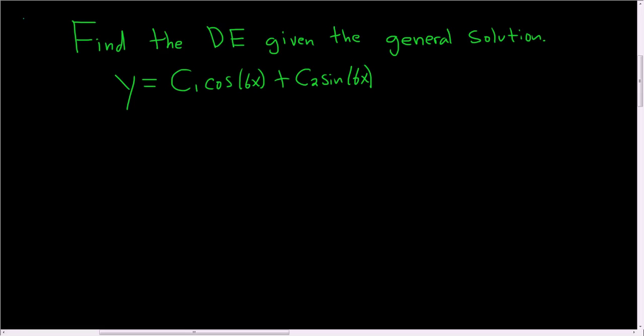Find the differential equation given the general solution. So in this case, our solution has the form y equals c1 e to the alpha x cosine beta x plus c2 e to the alpha x sine beta x.